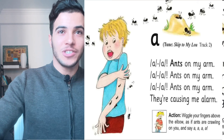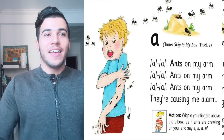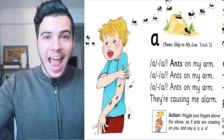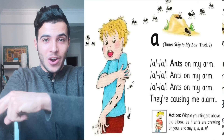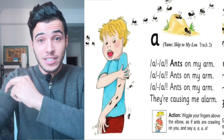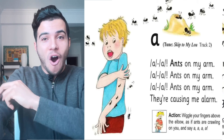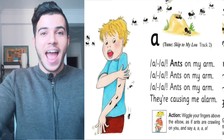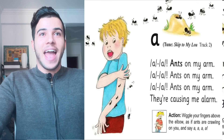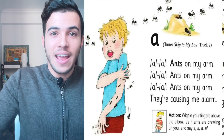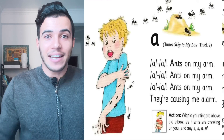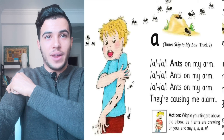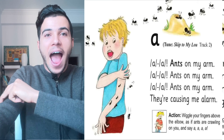As you can see, here is a boy, and the ants are crawling on him — on his arm. And as you can see, there are so many ants crawling on the boy!